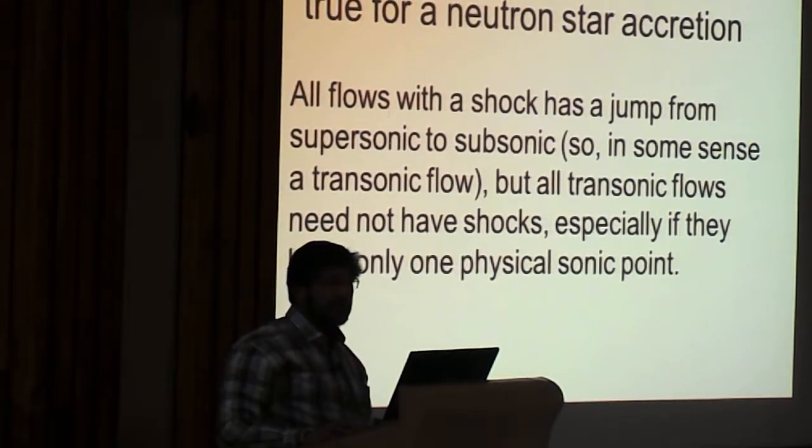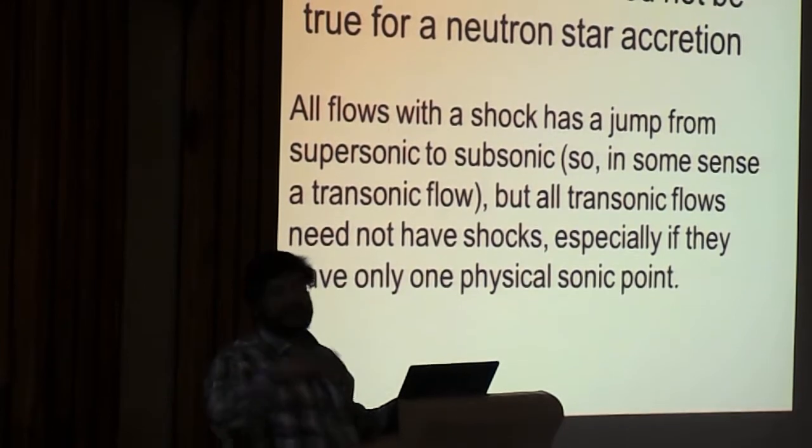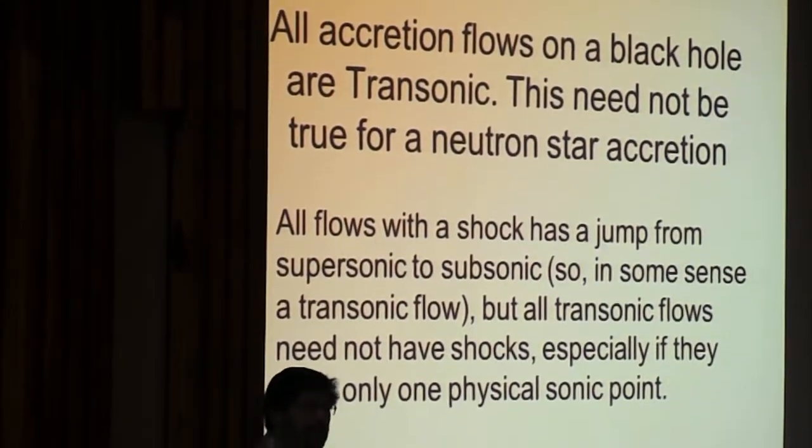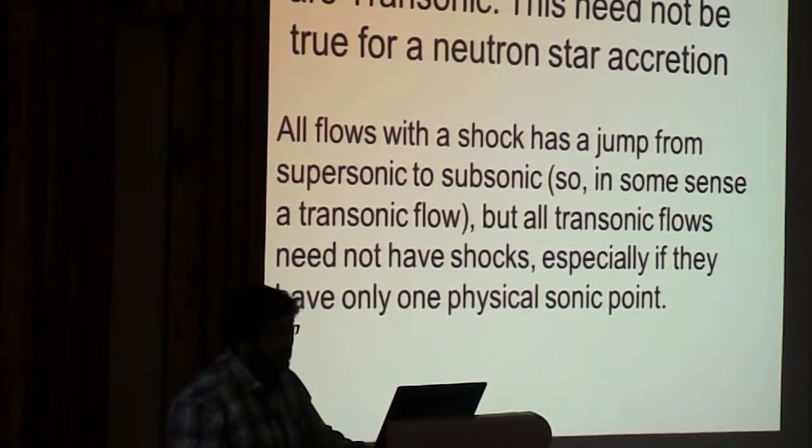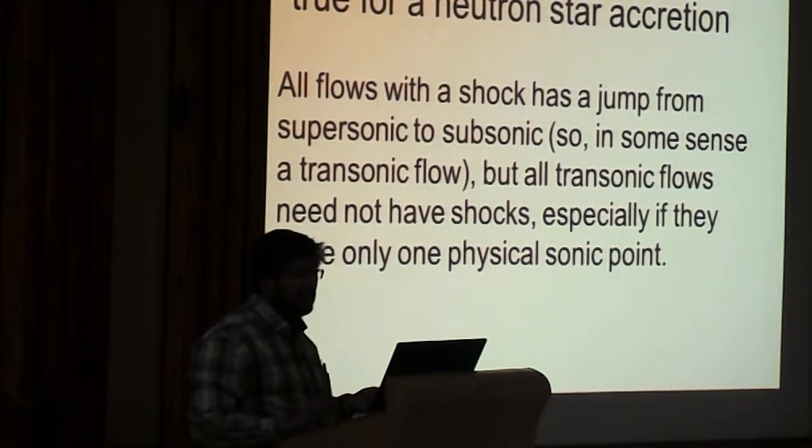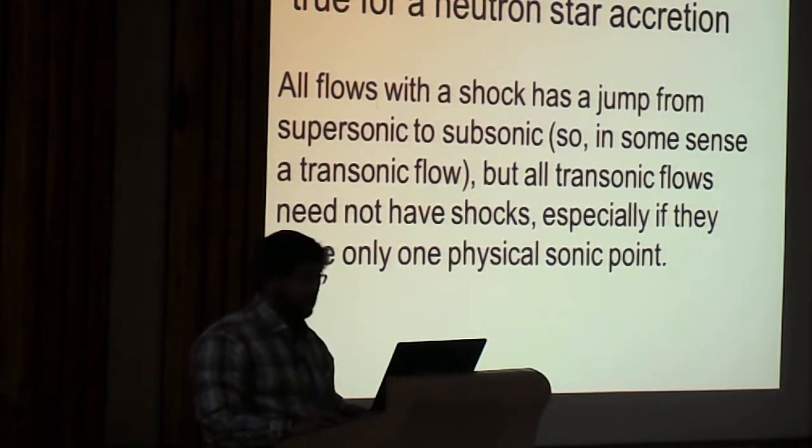And that means that the accretion onto the black hole also slows down at, let us say, 10 to 15 Schwarzschild radii because of the centrifugal force and then we start with a supersonic, subsonic, supersonic to subsonic transition then it enters into black hole supersonic again. So that region we will call boundary layer of the black hole.